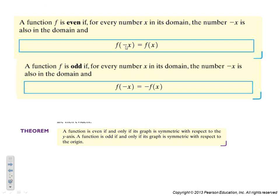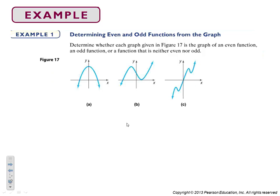The first thing we're going to look at is odd and even functions. If a function is even, when you put a negative x in you'll get out the original function. When a function is odd, if you put in a negative value for x you'll get out the opposite of the entire function. A function is even if and only if its graph is symmetric with respect to the y-axis. A function is odd if and only if its graph is symmetric with respect to the origin.